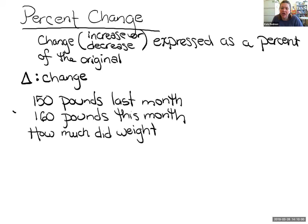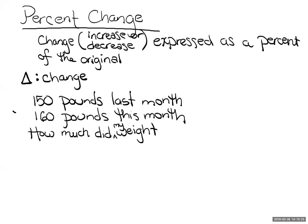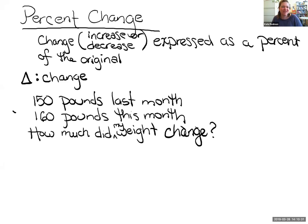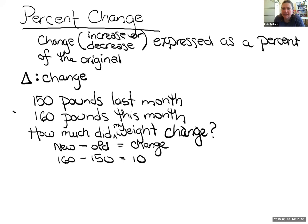Mathematically, how could I take 150 and 160 and reach 10 pounds? If I added them I'd get 310 — that'd be a really big change. You'd subtract. I could take my new weight, 160, subtract out my old weight, 150, and get the change: 10 pounds. Everything we're going to do is based on this — if you don't know how much the change is, you know how to go find it.